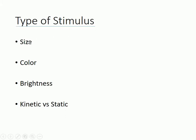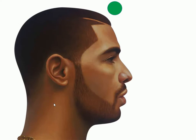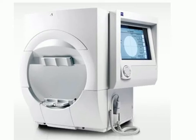The variables we can work with for the stimulus are its size, its color, how bright it is, and whether it's a kinetic moving stimulus or a static non-moving stimulus. In kinetic testing — used in Goldman visual field testing — the stimulus moves and we identify where it's first seen. In the most commonly used test nowadays, such as the automated Humphrey test, it's a static test.